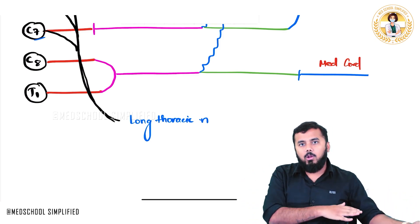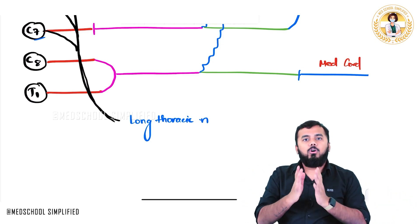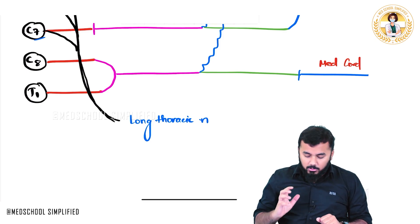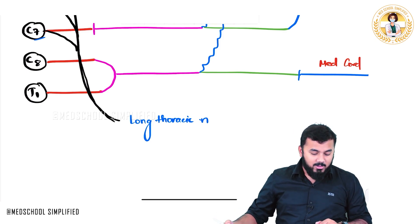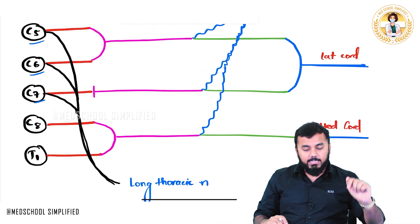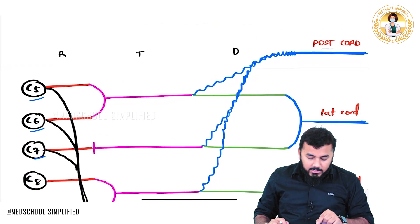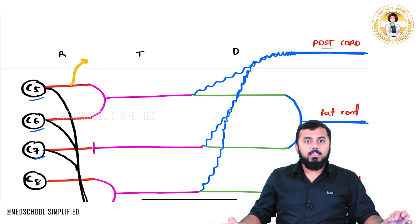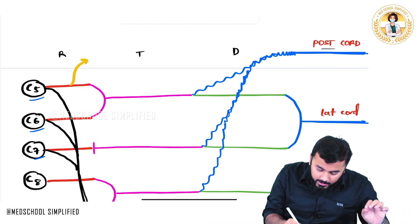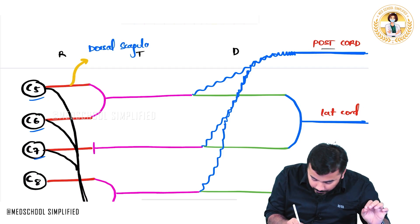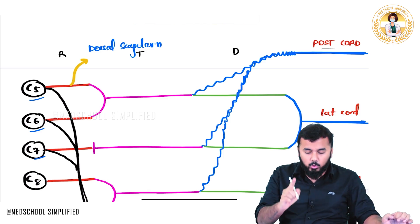I want you to watch the previous lectures before this brachial plexus lecture. So long thoracic nerve damage results in winging of scapula. Next, from the root of C5, a small nerve comes up — this is called the dorsal scapular nerve.